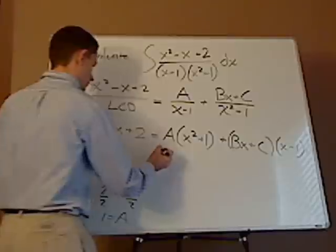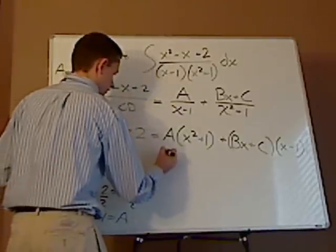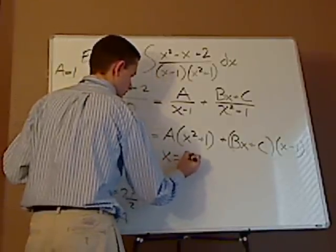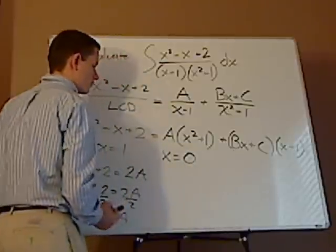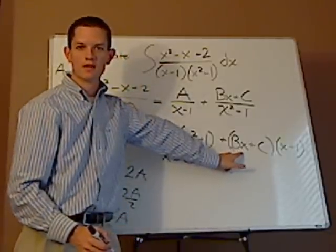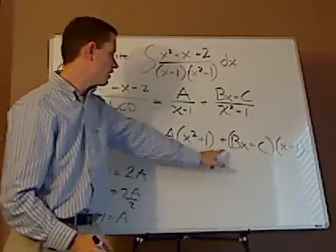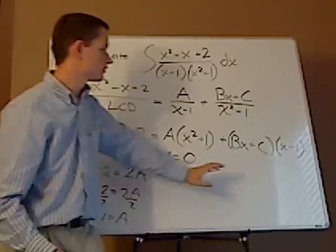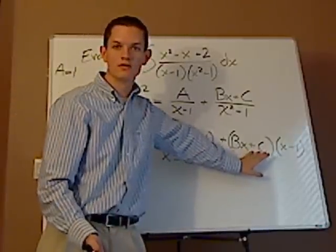So what I'm going to do next is I'm going to set x equal to 0. If I set x equal to 0, this b is going to cancel out. I already know what a is, so then all I would have to do is find c.